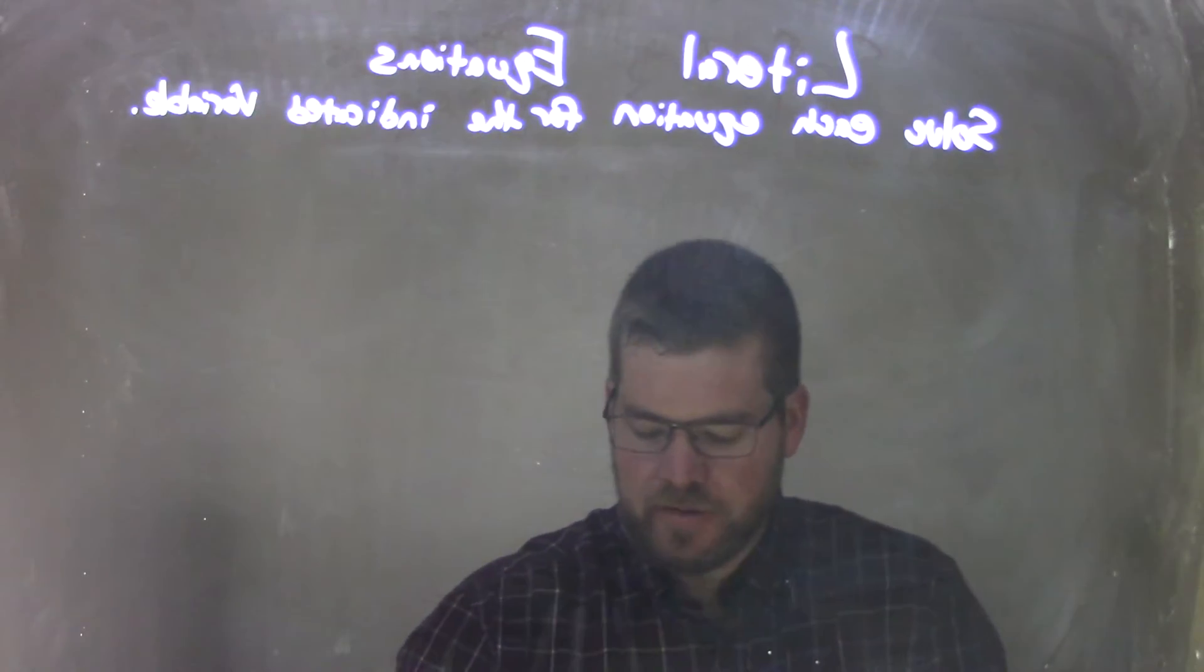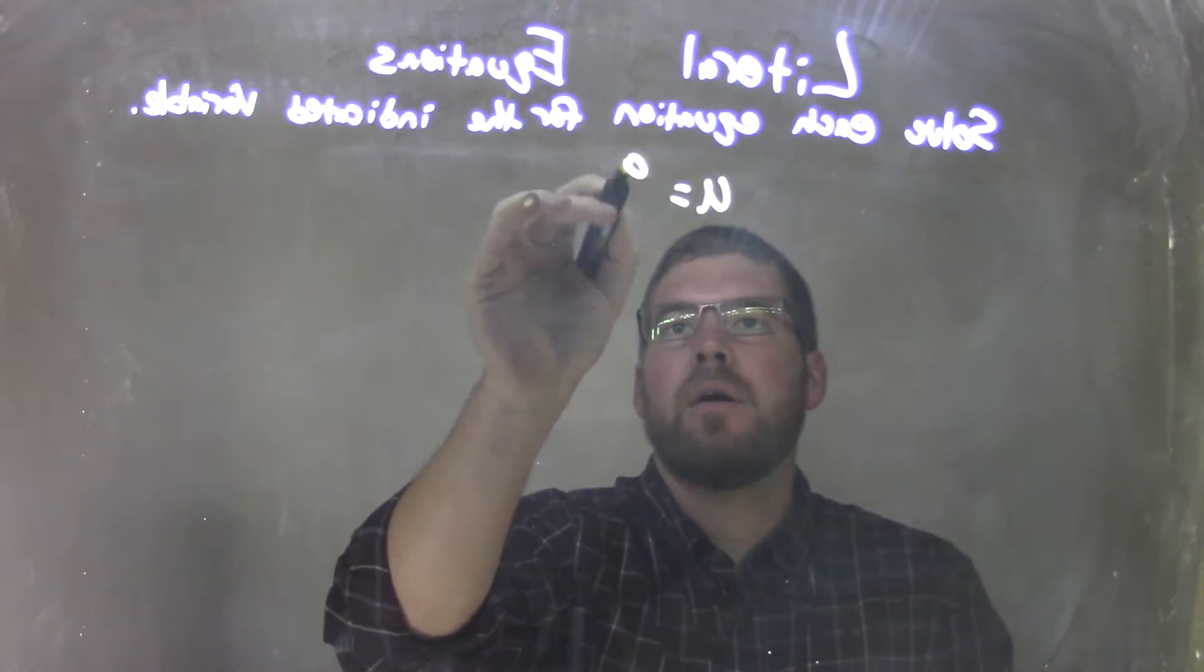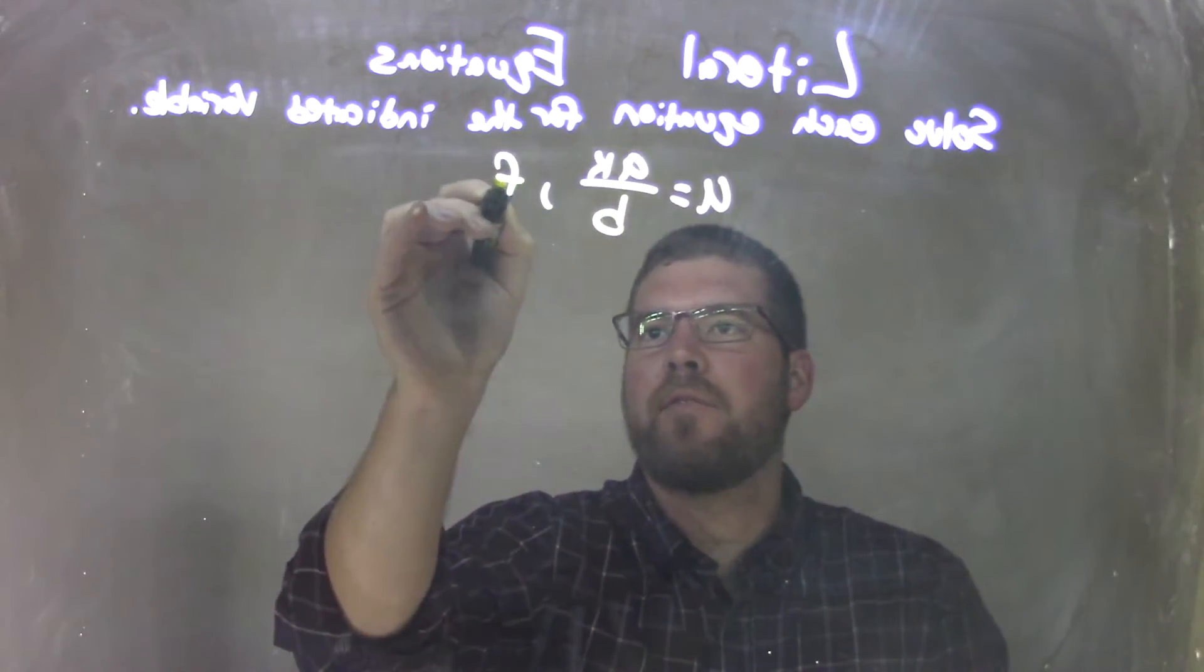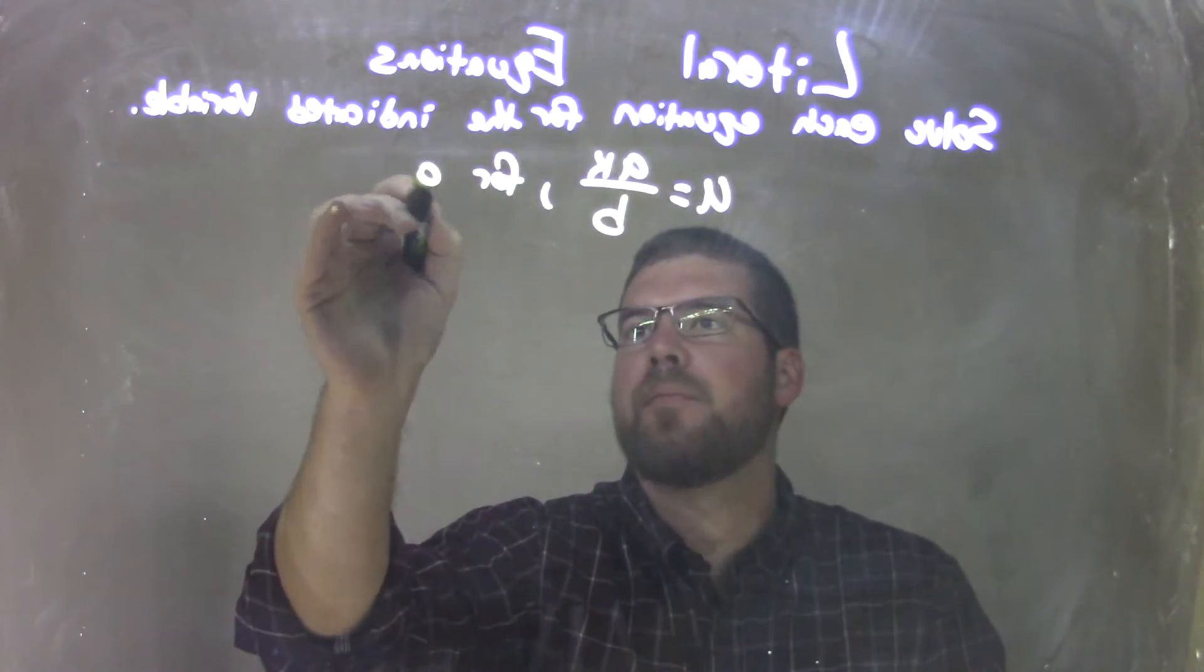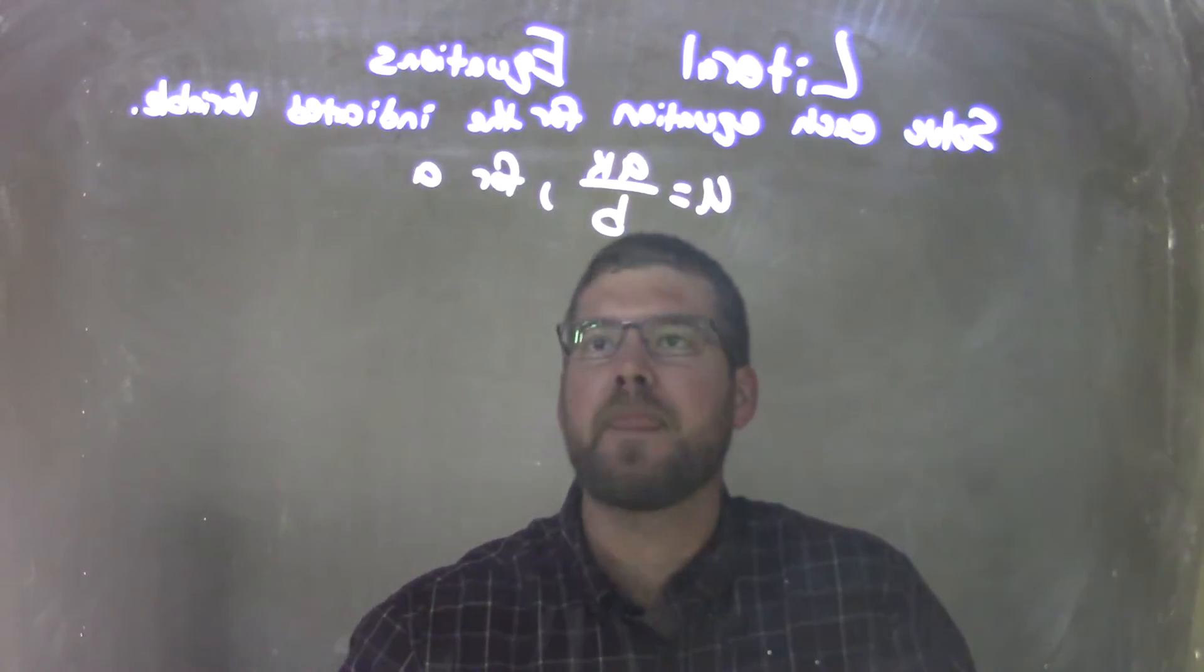So if I was given this equation U equals AK over B and we're solving that for A. So we have U equals AK over B and we're solving that for A.